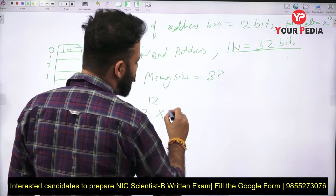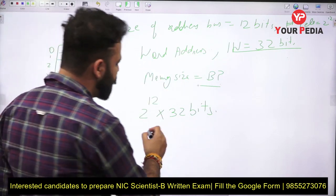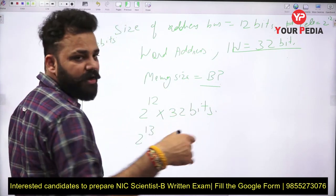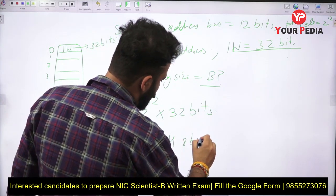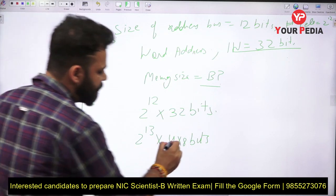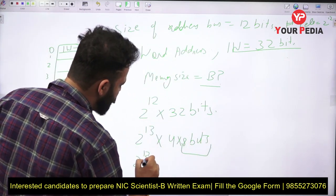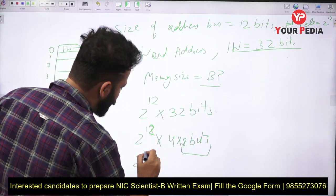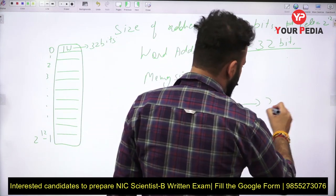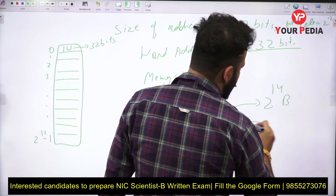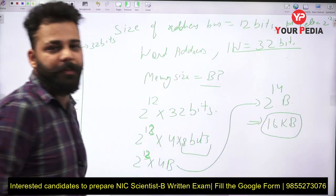You can calculate the memory size as total number of cells (2¹²) multiplied by 32 bits. To convert to bytes, note that 32 bits equals 4 bytes. So memory equals 2¹² into 4 bytes, which is 2¹² × 2² = 2¹⁴ bytes, equal to 16 kilobytes.